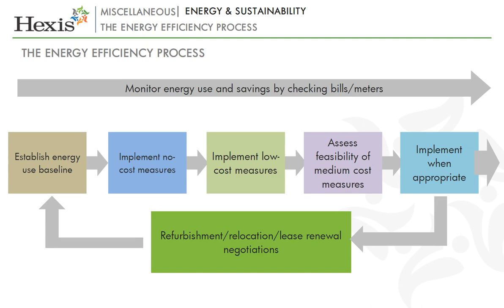Let us now understand the energy efficiency process. Energy efficiency and carbon management should be thought of as an ongoing process. The key to energy efficiency is management — the first maxim being that you can't manage what you don't measure. Thus, establishing a baseline of energy use should be your top priority as a facilities manager. Get the bills out, check consumption, keep a record of it, check the meters, and consider how operational changes and external factors such as the weather have affected energy consumption.